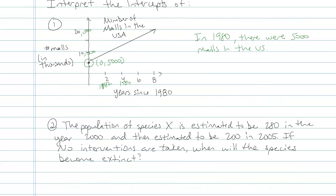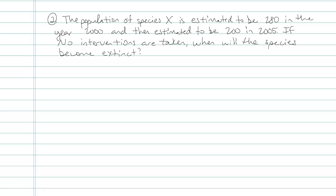Let's look at another one. This is one that I think is a little more important. The population of species X is estimated to be 280 in the year 2000, and then estimated to be 200 in 2005. If no interventions are taken, when will the species become extinct?